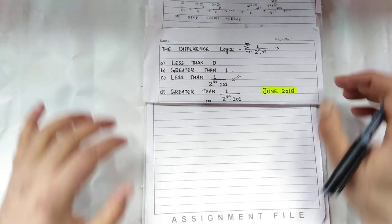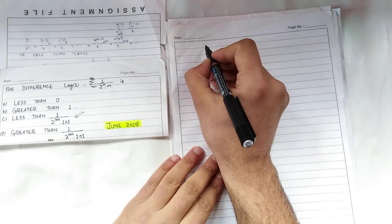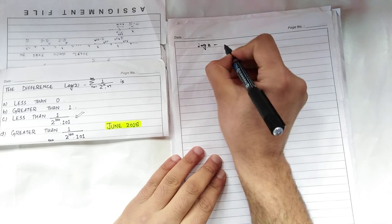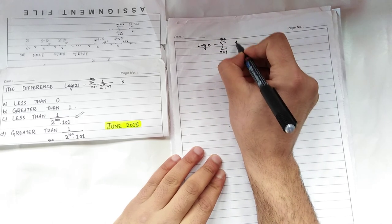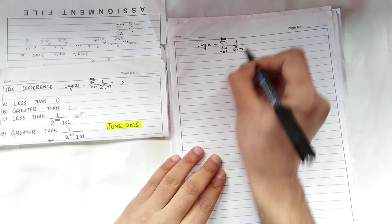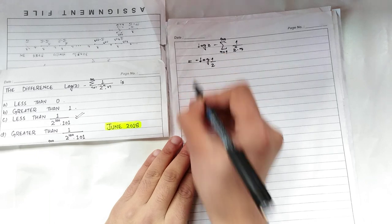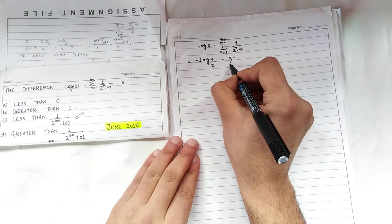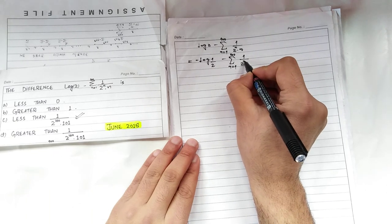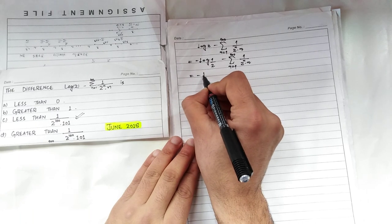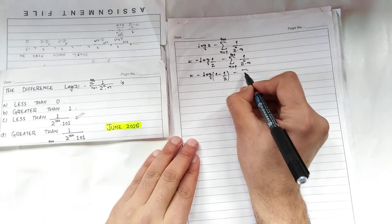Now the question is log of 2 minus sum from n equals 1 to 100 of 1 upon 2 power n multiplied by n. This log of 2, if I write it as negative log of 1 upon 2, then I will put a negative sign here so that when I use the laws of logarithm, I will be getting log of 2 back. This is the same, we are not doing anything with this.